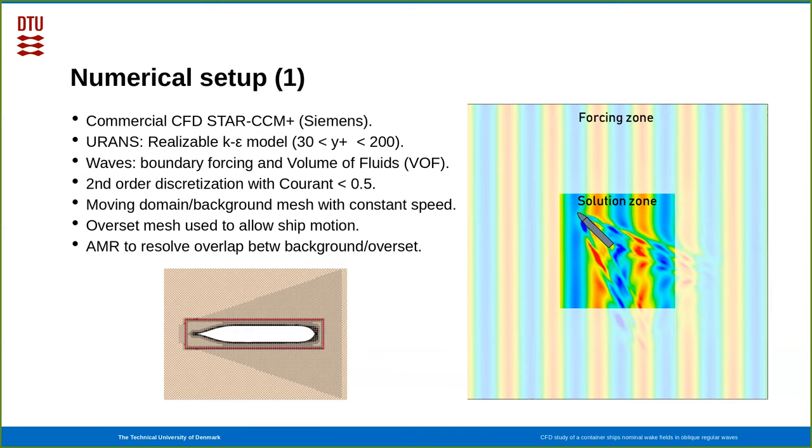The background mesh is moving along with the mean speed of the ship, and then we use an overset mesh to allow the ship to roll and pitch and heave. To ensure an accurate coupling between the background mesh and the overset mesh, we use adaptive mesh refinement to ensure equal grid spacing in that overlap region. On the bottom left, you can see the overset mesh in red, and the background mesh illustrated with the Kelvin wave local refinement that was employed.